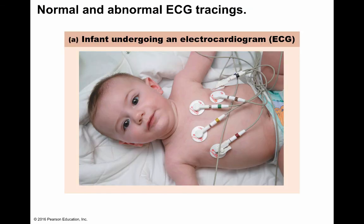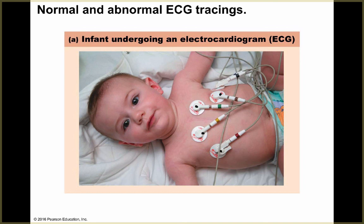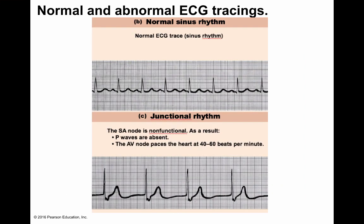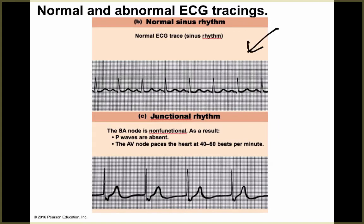This shows an infant undergoing an electrocardiogram, with different leads placed throughout the body. A normal sinus rhythm is shown for comparison. Junctional rhythm is where the P wave is missing — there should be a small hump before each QRS in a normal tracing, but it's absent in junctional rhythm. The AV node paces the heart at about 40–60 beats per minute if there is no depolarization of the SA node.